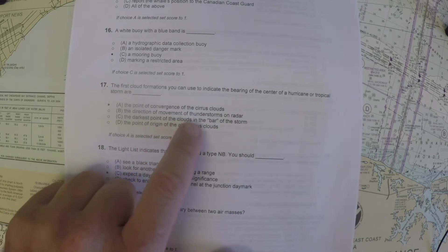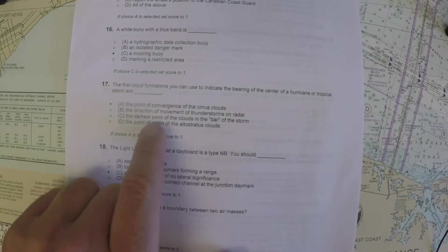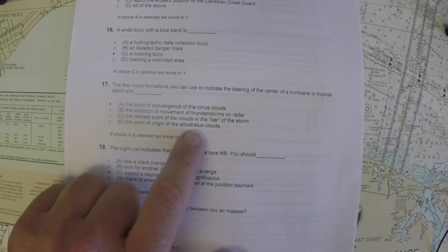And your choices are regarding the convergence of cirrus clouds, the direction of thunderstorms on radar, the darkest points of the clouds, and the point of origin of alto stratus.